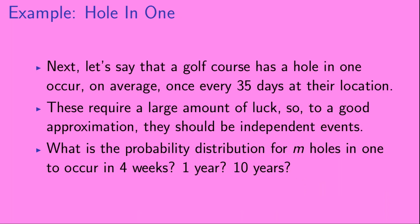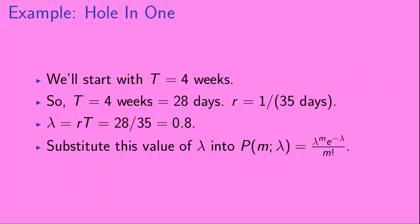Let's move on to another example. Let's say that a golf course has a hole-in-one occur, on average, once every 35 days. A hole-in-one requires a large amount of luck, so to a good approximation, they should really be independent events. What is the probability distribution for m holes-in-one to occur in 4 weeks, 1 year, or 10 years? Starting with t = 4 weeks, which equals 28 days, and r = 1/35 days, λ = rt = 28/35 = 0.8. We'll substitute λ = 0.8 into our formula for the Poisson distribution.